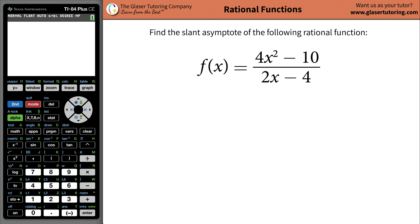Hello everyone, and thank you so much for joining me today and learning how to do a slant asymptote of this rational function: 4x squared minus 10 divided by 2x minus 4.